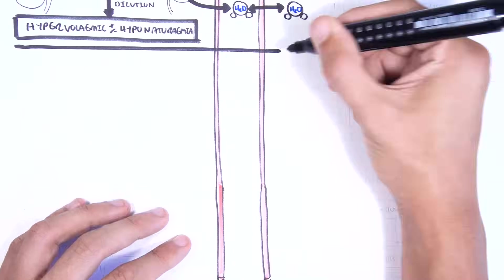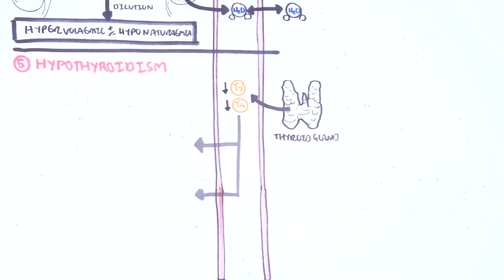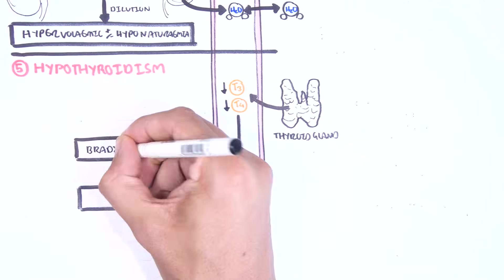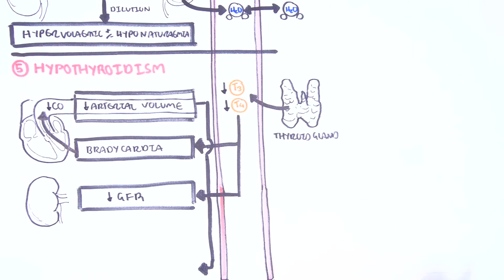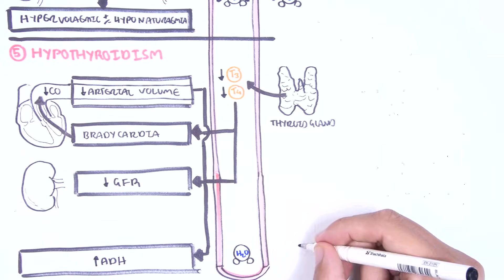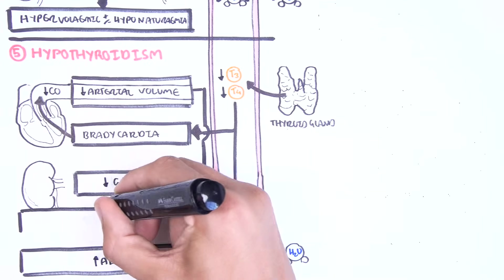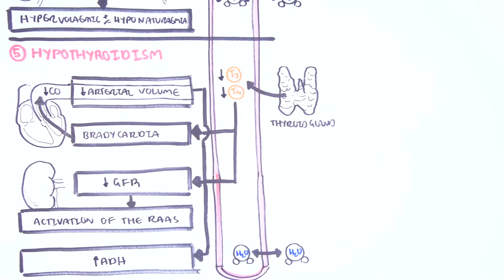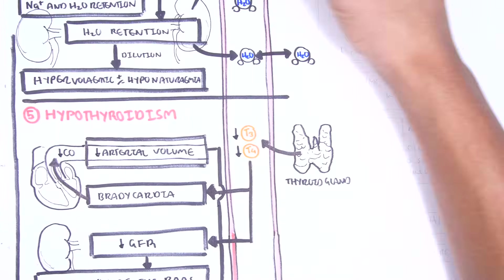The mechanisms by which hypothyroidism causes hyponatremia can be interpreted as follows: low thyroid levels cause bradycardia and a reduced glomerular filtration rate. Bradycardia causes a decrease in cardiac output, meaning reduced arterial pressure, and the body detects this change and releases ADH to try to retain water. The low GFR stimulates the renin-angiotensin-aldosterone system, which attempts to retain water and sodium via multiple mechanisms.